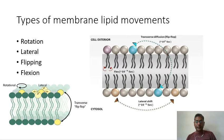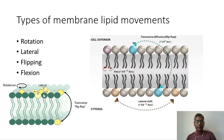The second type of movement is lateral, where the phospholipid moves around in one leaflet. The phospholipid is moving laterally on only one side of the plasma membrane — this side is called a leaflet.